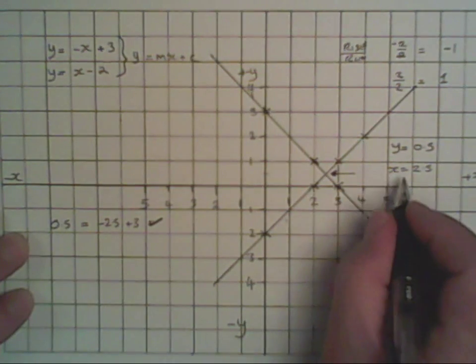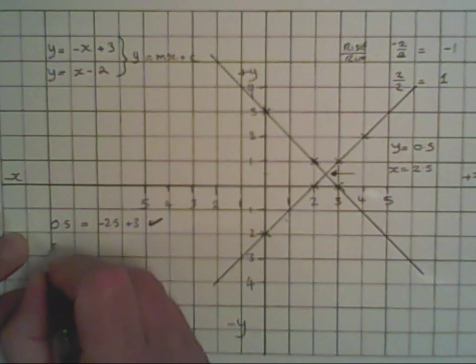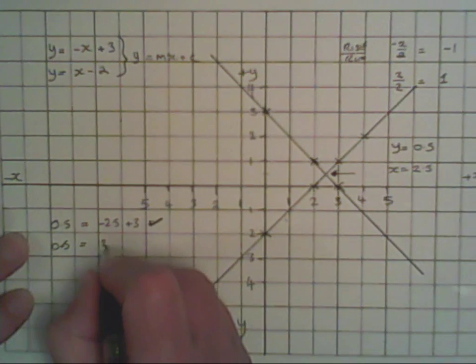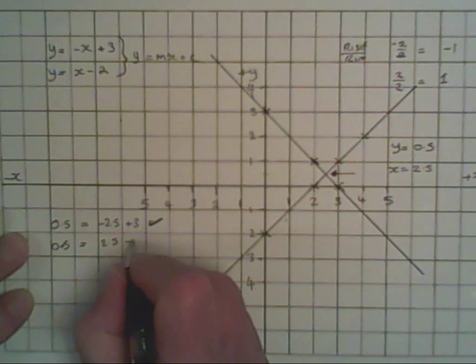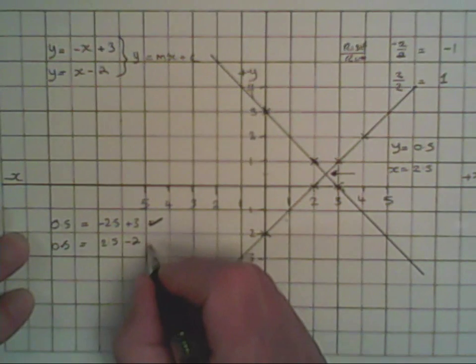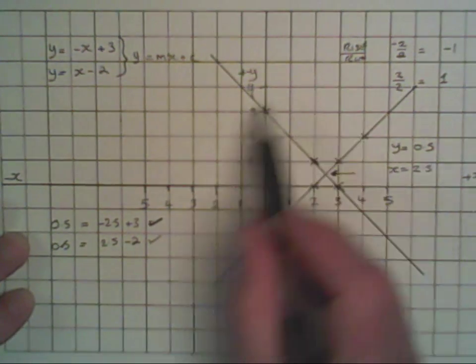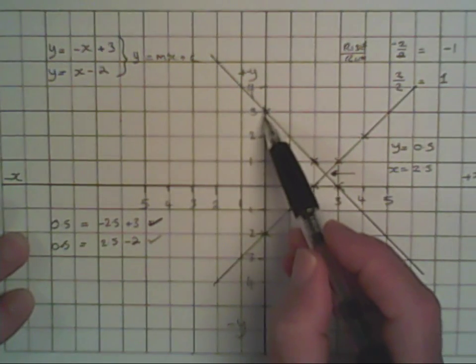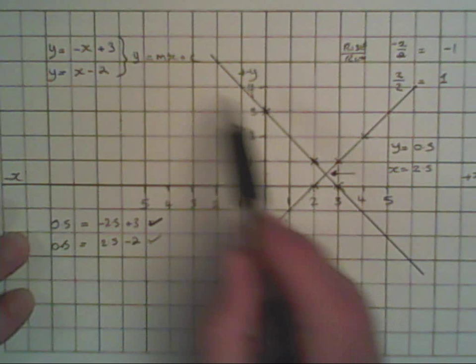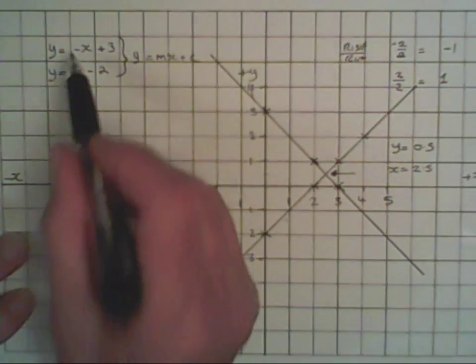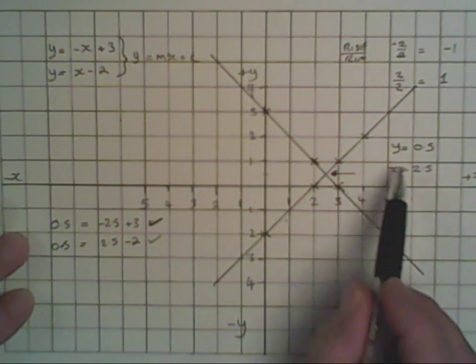And now we need another value of y for the second equation. We've got y equals 0.5, and that equals x, which is 2.5, minus 2. 2.5 minus 2 equals 0.5. So we've now solved the equation by using this rise over run method, plus putting the line through the intercept, which is c. The y value is 0.5, the x value is 2.5. Slotting them back into the equation proves that what we've achieved is true.